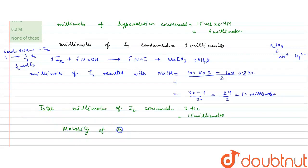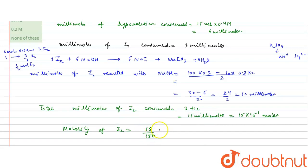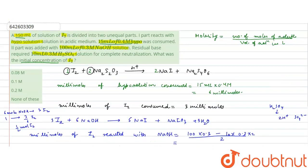Molarity of I₂ = millimoles / milliliters = 15 millimoles / 150 mL = 0.1 mol per liter. Since milli cancels with milli, we get 0.1 molar. So the molarity of the I₂ solution is 0.1 molar, which is the correct option.